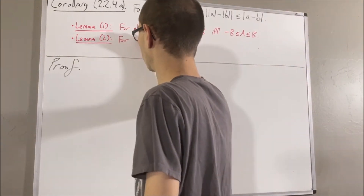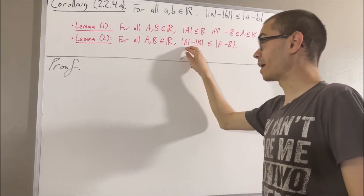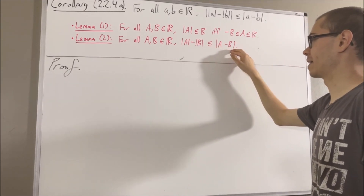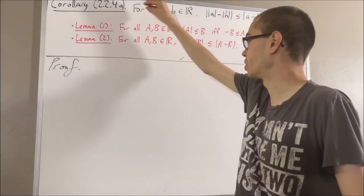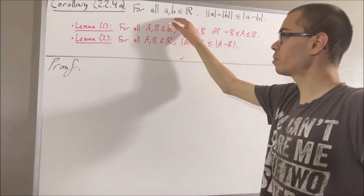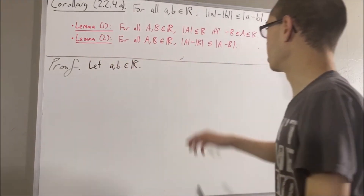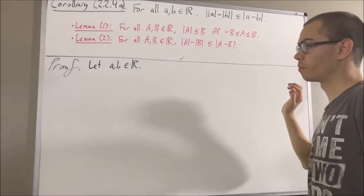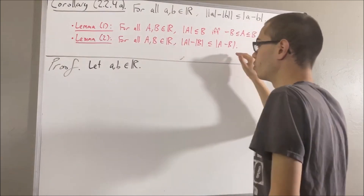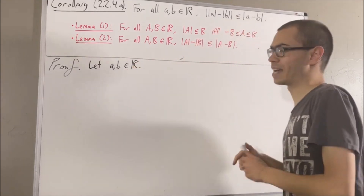Now here's the second one: for every two real numbers a and b, the absolute value of a minus the absolute value of b is less than or equal to the absolute value of a minus b. Now let's get into proving this corollary. Since we're proving a statement about every two real numbers, let me take any two real numbers and call them a and b. Our goal is to show that this is true. To start, let's apply Lemma 2. By Lemma 2, the absolute value of a minus the absolute value of b is less than or equal to the absolute value of a minus b.